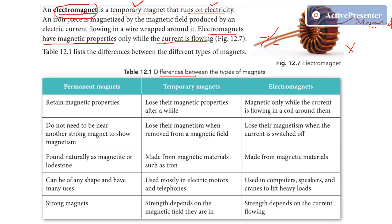Now let's see the differences between the different types of magnets. We have studied permanent magnets, temporary magnets, and electromagnets. The first difference is: permanent magnets retain their magnetic properties, while temporary magnets will lose their magnetic properties after a while — when the magnet is removed from the magnetic field.